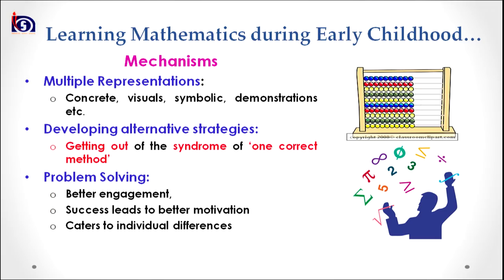The third mechanism is multiple representation. We have different kinds of learners in our classrooms who can understand and learn by different methods and who prefer different methods. Therefore, we should have concrete representations, visual representations, symbolic representations, and demonstrations to facilitate effective learning of mathematics in our classes.